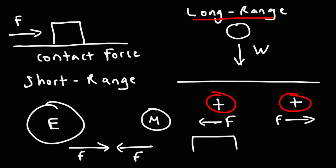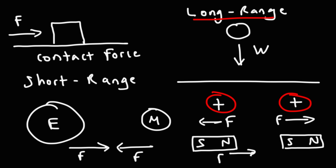Another example is the magnetic force. Let's say if you have two bar magnets — that's the North Pole, that's the South Pole. The North Pole of one magnet is attracted to the South Pole of the other, so this is a force of attraction. This is a force of repulsion. The magnetic force is another long-range non-contact force. How far the range extends depends on the strength of the magnetic field, but these forces can exert an effect on each other from a distance.